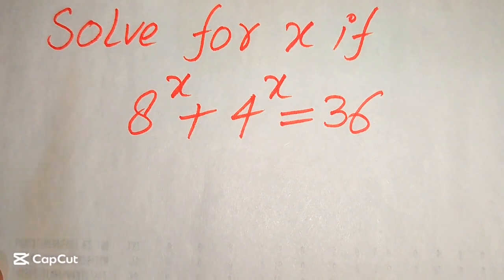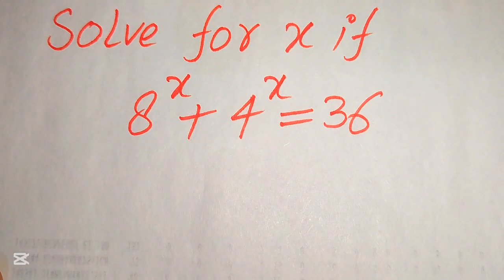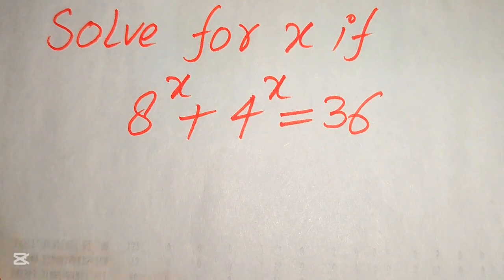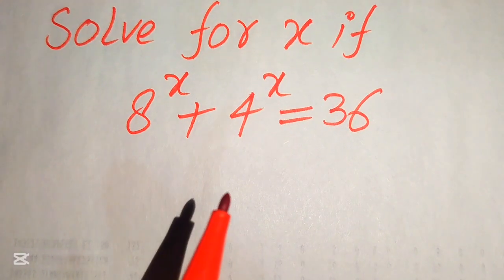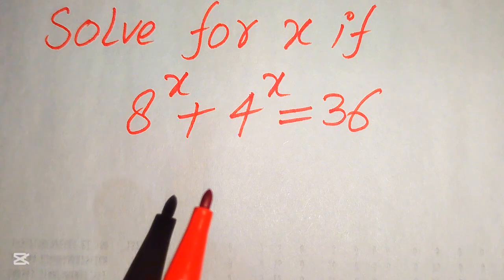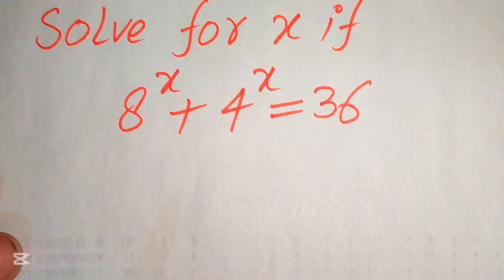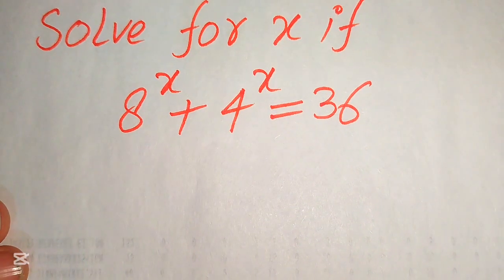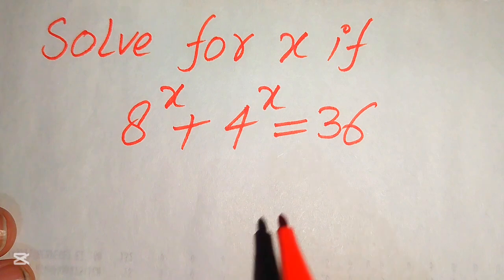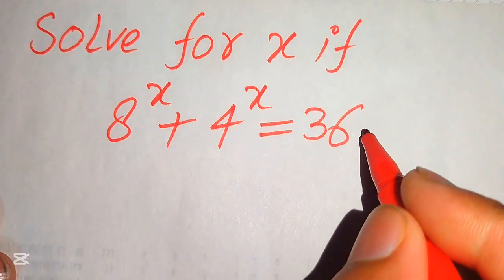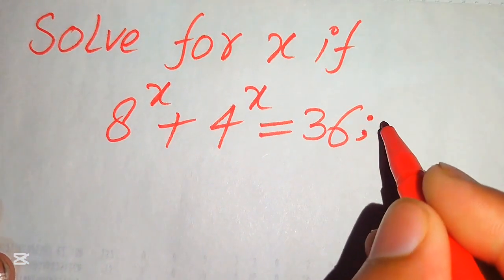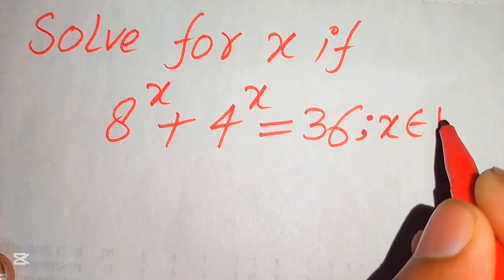Hello everyone, welcome. We will solve this algebra problem: 8 to the power of x plus 4 to the power of x equals 36, and we solve this problem for real values of x.